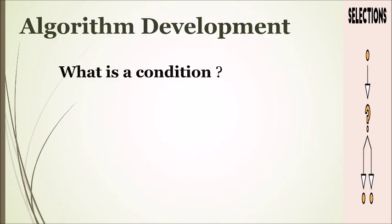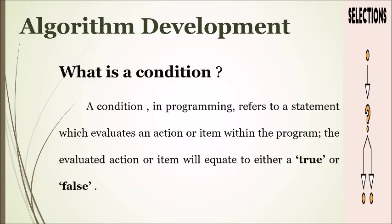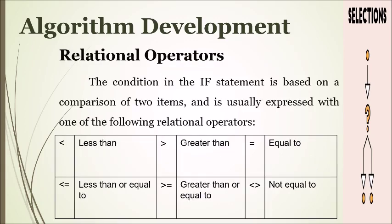What is a condition? A condition in programming refers to a statement which evaluates an action or item within the program. The evaluated action or item will equate to either true or false. Relational operators: the condition in the if statement is based on the comparison of two items and is usually expressed with one of the following relational operators.